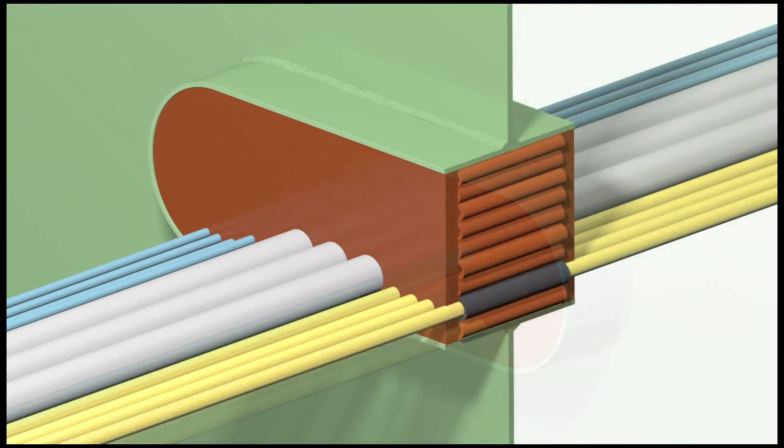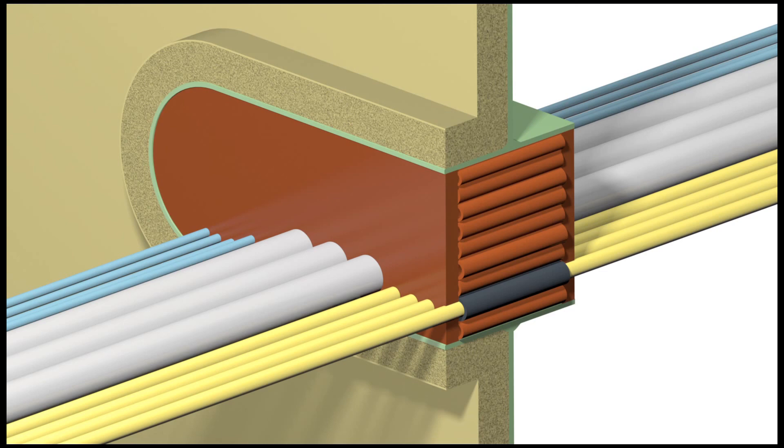For A-class penetrations which are insulated, the Noferno multi-cable transit frame needs to be insulated only at the insulated side of the bulkhead. No insulation is required on the cables or the face of the transit.